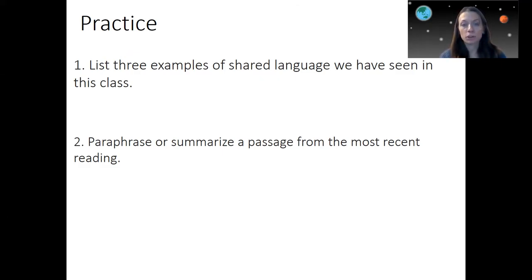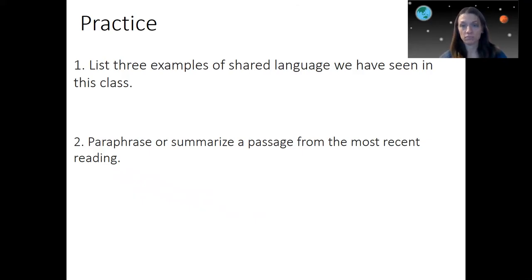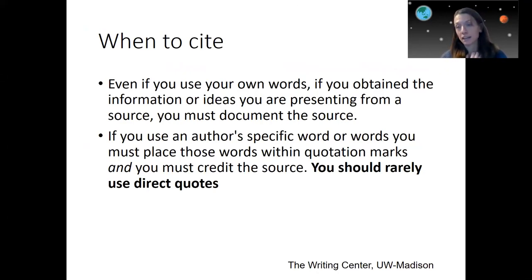Here's some practice you can do. Number one: list three examples of shared language from this class, as it differs depending on the topic. Number two: paraphrase or summarize a passage from the most recent reading you've had. Practice doing it deliberately — it will become more natural and less burdensome, but it is more work than copying down answers. I want you to do this paraphrasing and summarizing for every single assignment, even if it's a two-point homework assignment. It needs to be in your own words to optimize your learning, show me that you've learned, and avoid academic misconduct.